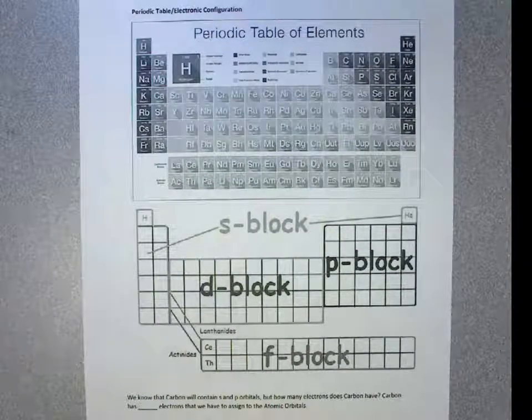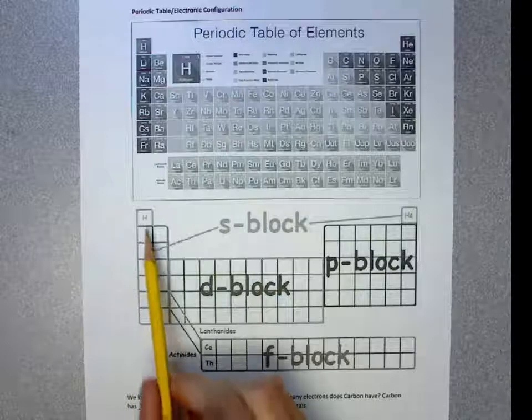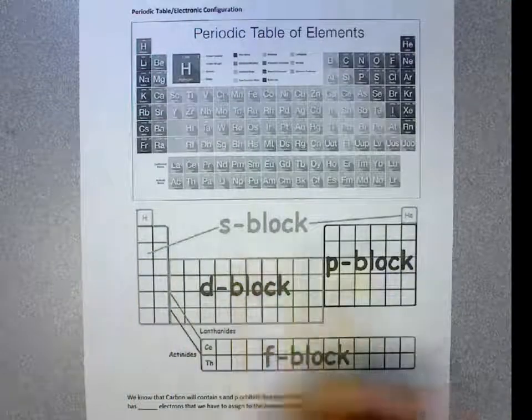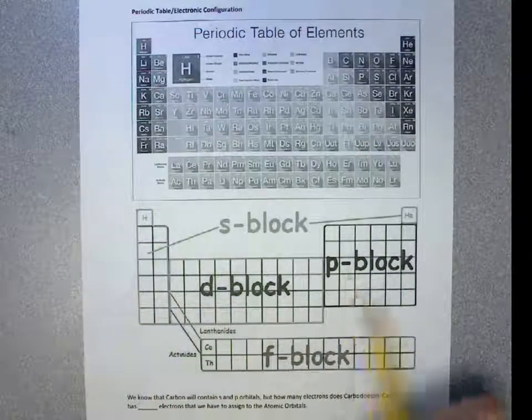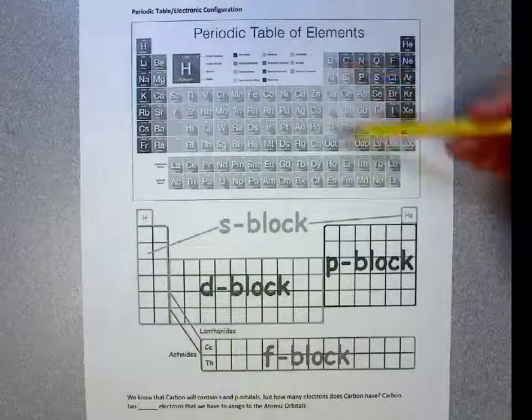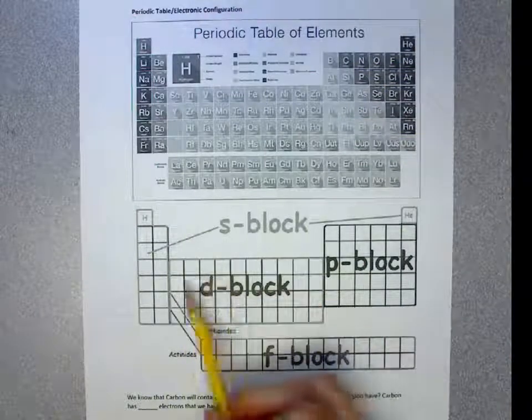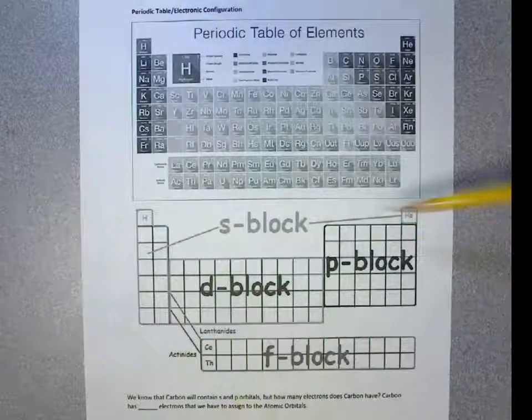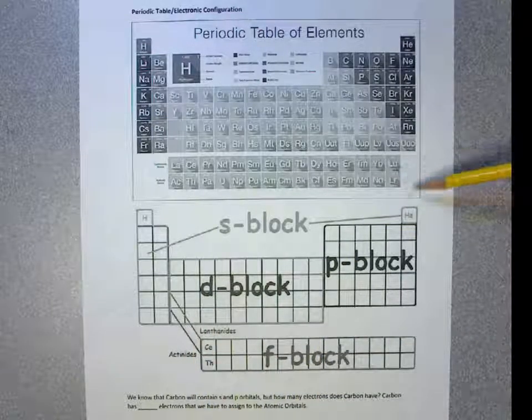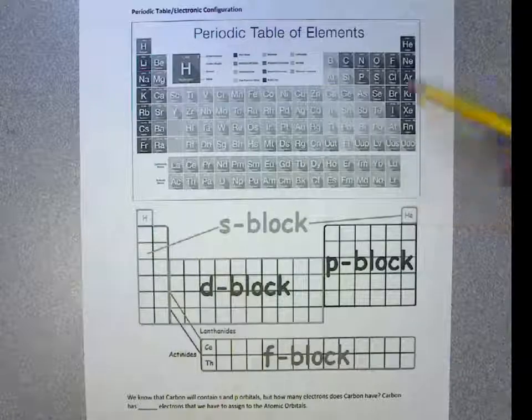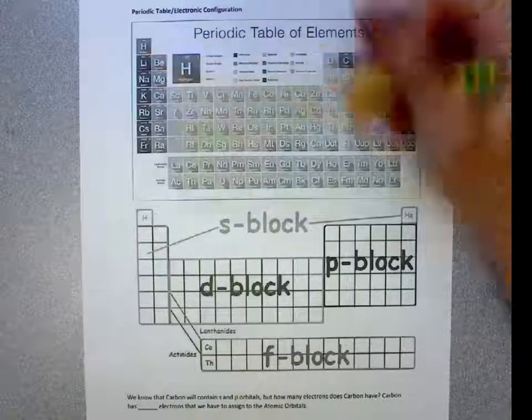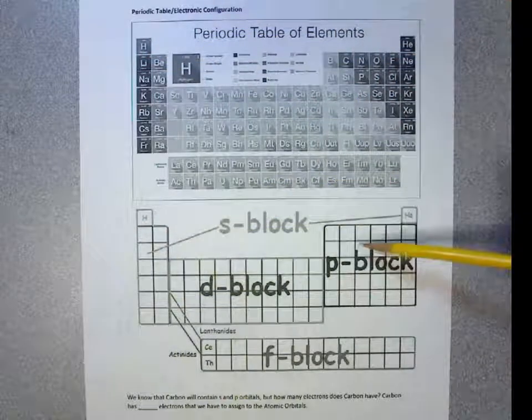If we look at a periodic table, we have the S block existing in the first two columns. We have the P block existing here. The D block with the transition metals. And the F block with the bottom two rows here. We will be primarily looking at the S and P block only.